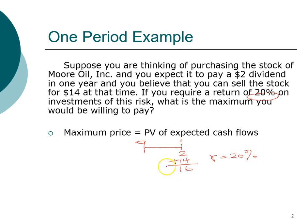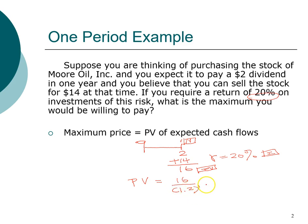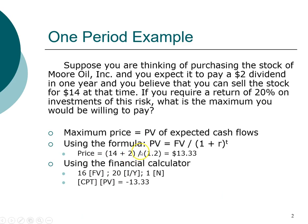The required return is twenty percent, so our discount rate is twenty percent. The sixteen dollars is the future value at the end of year one. We discount sixteen dollars back at twenty percent for one year using either the formula or a financial calculator. The present value — the price of the stock today at year zero — comes out to thirteen dollars and thirty-three cents.